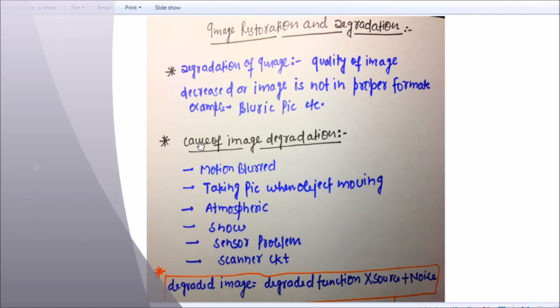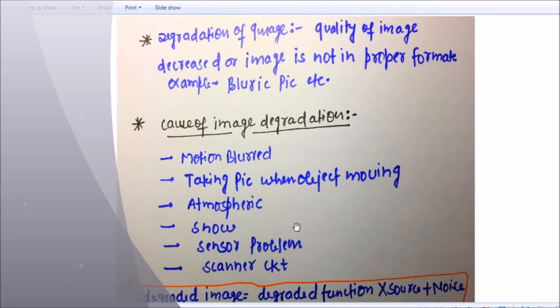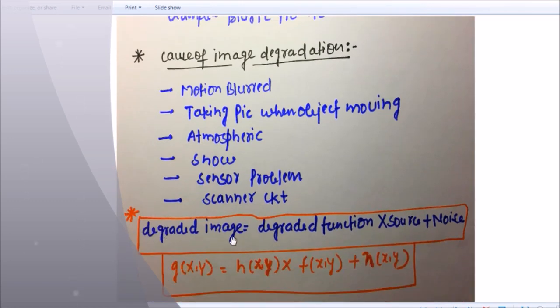Now the causes of image degradation: motion blur, taking picture when object is moving, atmospheric conditions, snow, sensor problems, and scanner circuit. The degraded image equation is: degraded image g(x,y) equals h(x,y) times f(x,y) where f(x,y) is our source image plus n(x,y) where n(x,y) is noise.